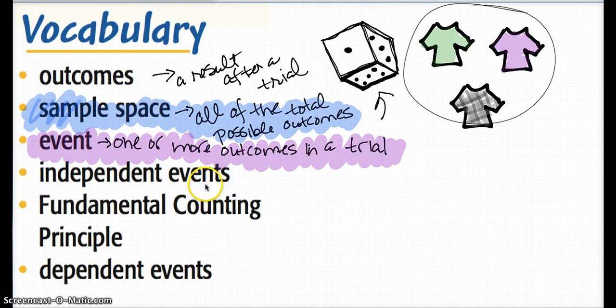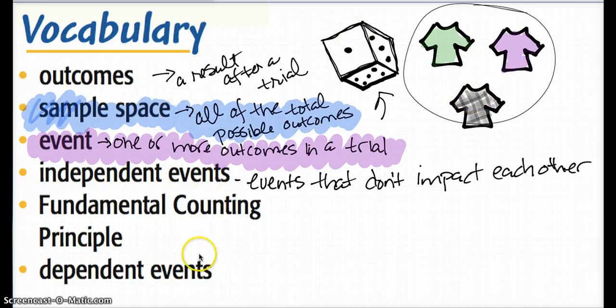Now, the idea of independent events comes from events that don't have a necessary effect on one another. For instance, if I were to roll my die and then choose a shirt at random, those events are independent of each other. However, if I were to pick one shirt at random and then pick another one from the pile, that's not independent because what happens on the first pick will influence what happens on the second pick.